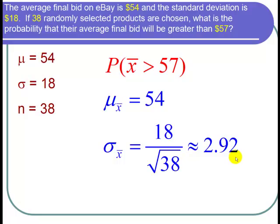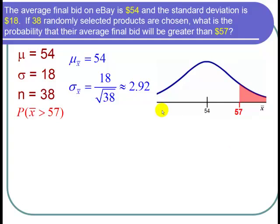So let's put this on a picture. The central limit theorem tells us the distribution is approximately normal, so I draw a normal curve. The mean is 54, so the center of that normal curve lies at 54. And I want the probability that X bar is greater than 57, so I shade in the area to the right of 57.